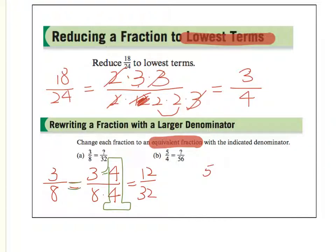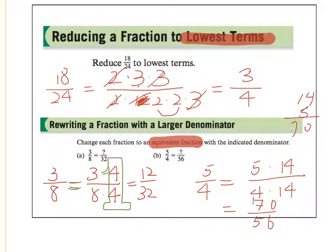Let's look at the next one. 5 over 4 should equal to what over 56? I can rewrite 56 into 4 times 14. Therefore, if I just multiply 5 by 14, I should have the equivalent fraction of 14 times 5, which is 70. So 70 over 56 is the equivalent fraction for 5 over 4.